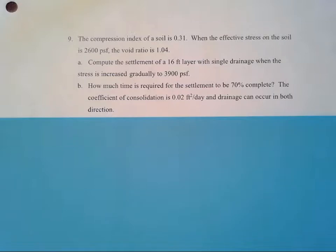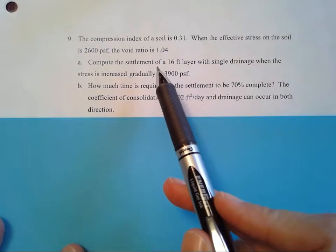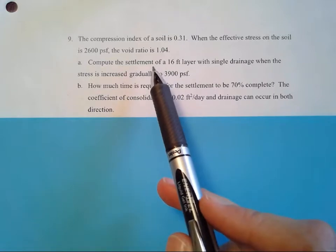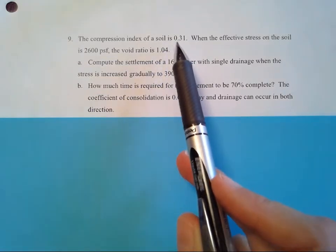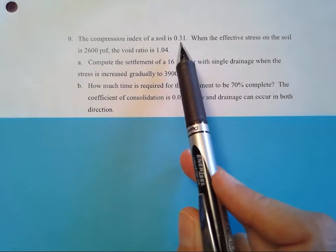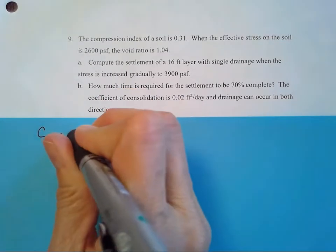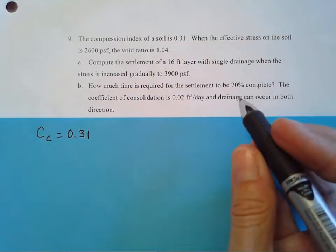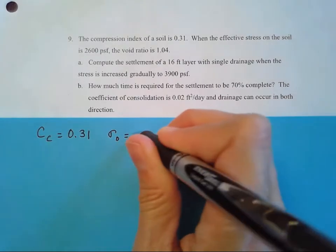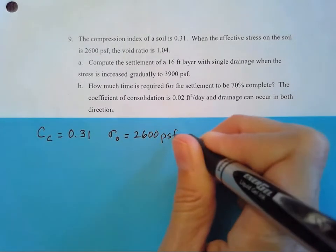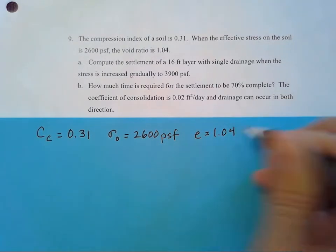We first want to compute the settlement of a 16-foot layer with single drainage when the stress is increased gradually to 3,900 PSF. We're going to be dealing with that Sc formula with the thickness and the C sub C, because we don't know a C sub V here. This compression index doesn't have any units after it, so that's our C sub C is equal to 0.31. We know the effective stress on the soil, so that's our sigma naught is 2,600 PSF and our void ratio is 1.04.